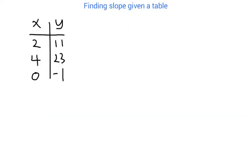Finding slope given a table, pretty simple. It's very much like what we just did. We've got three ordered pairs here: 2, 11, 4, 23, 0, negative 1.